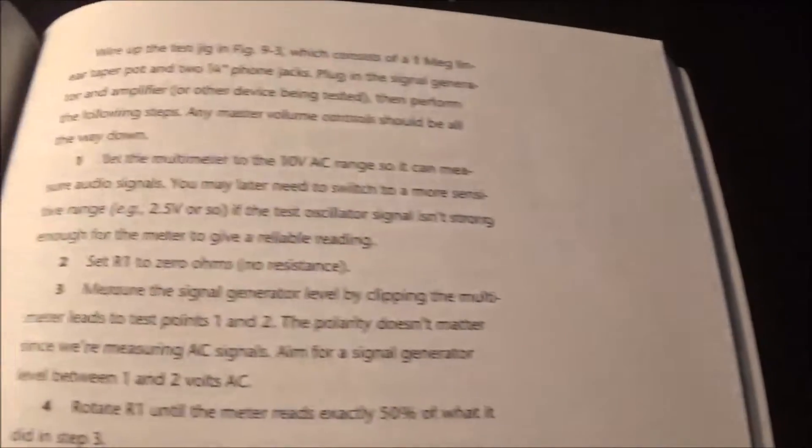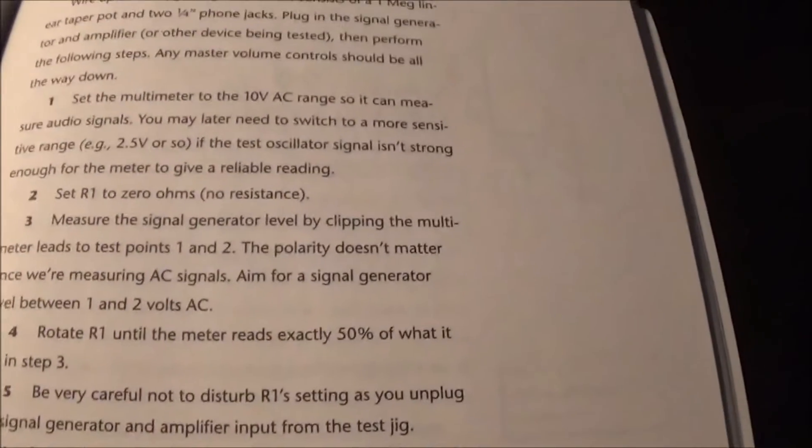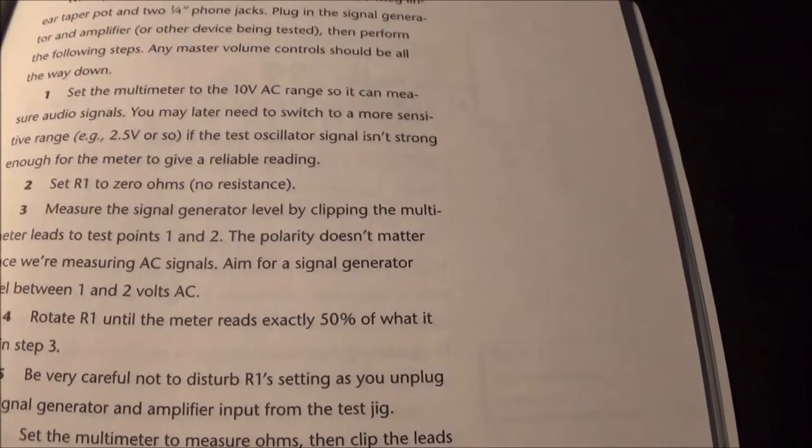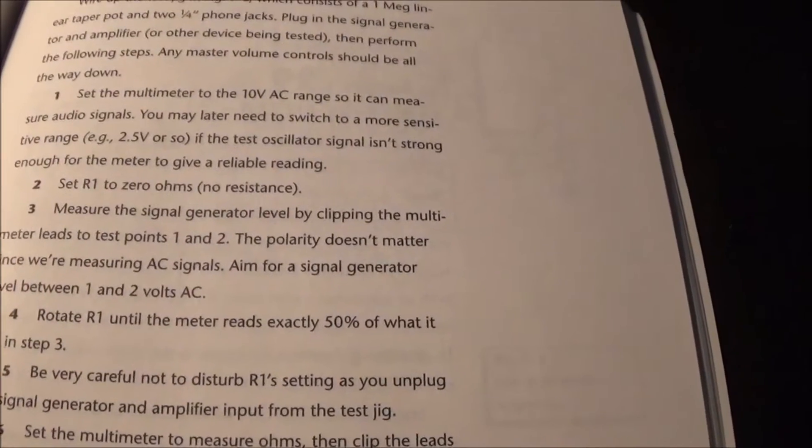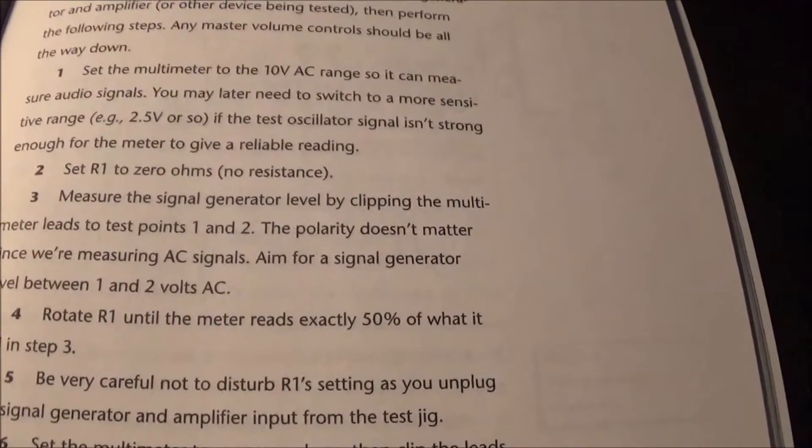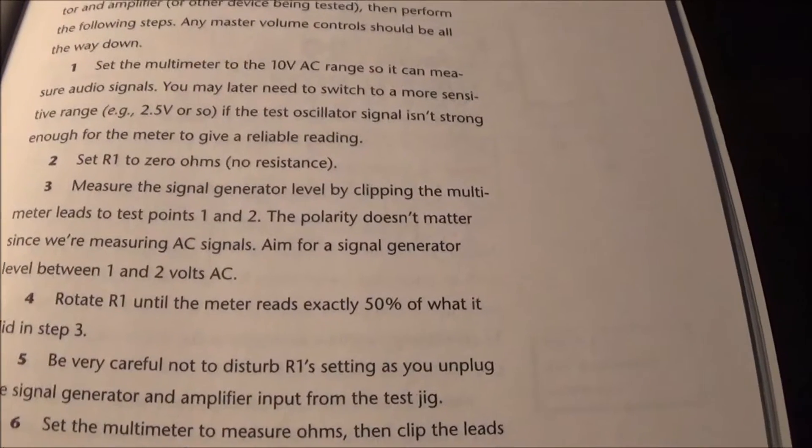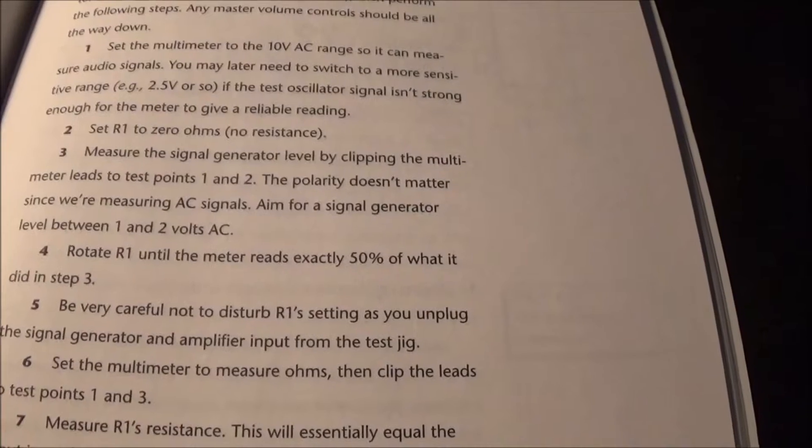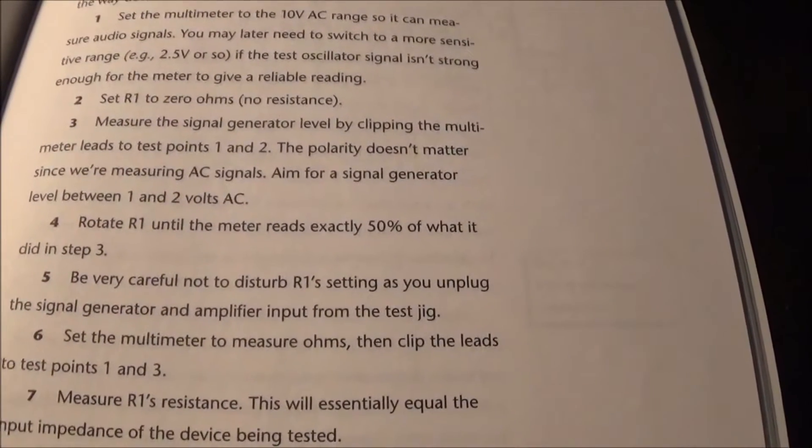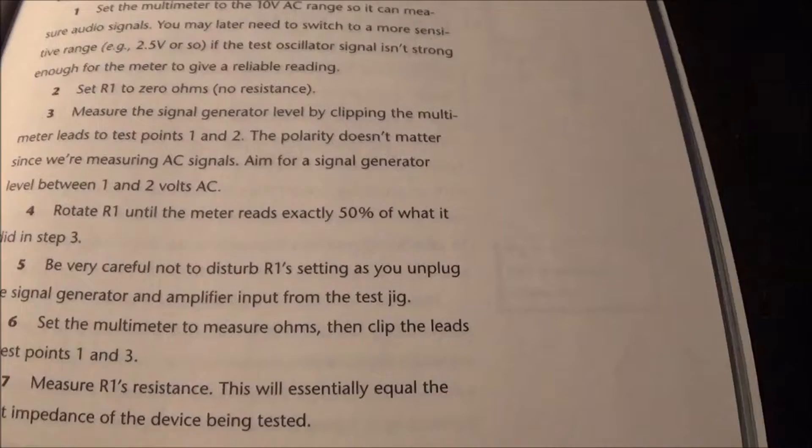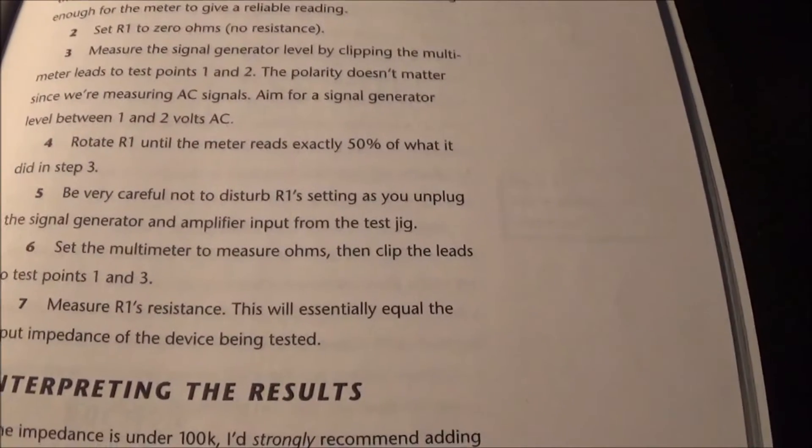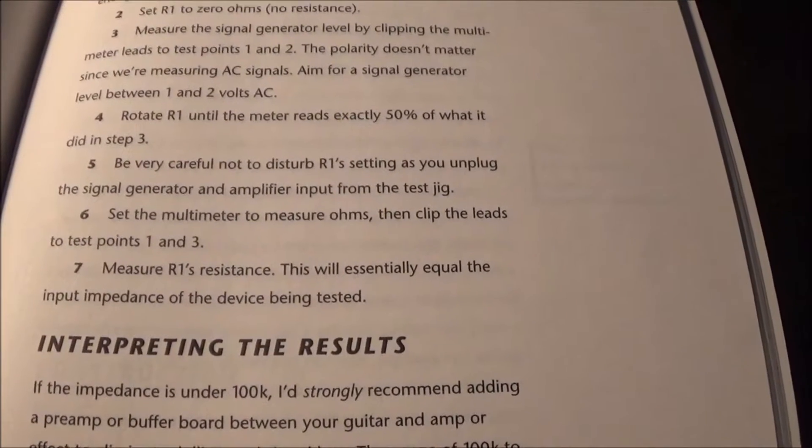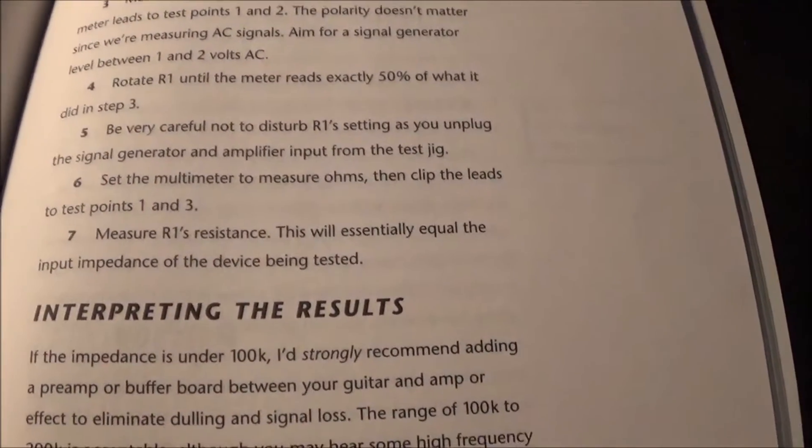There's a sequence here: set the multimeter to AC, get a signal of one to two volts, set your pot to zero ohms, and measure between test points one and two. Then rotate the pot until the meter reads 50% of what it did in step three.